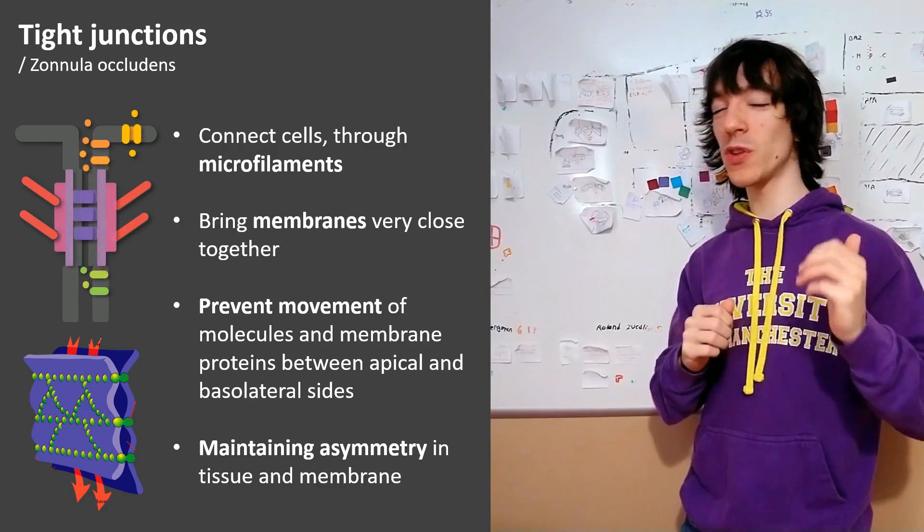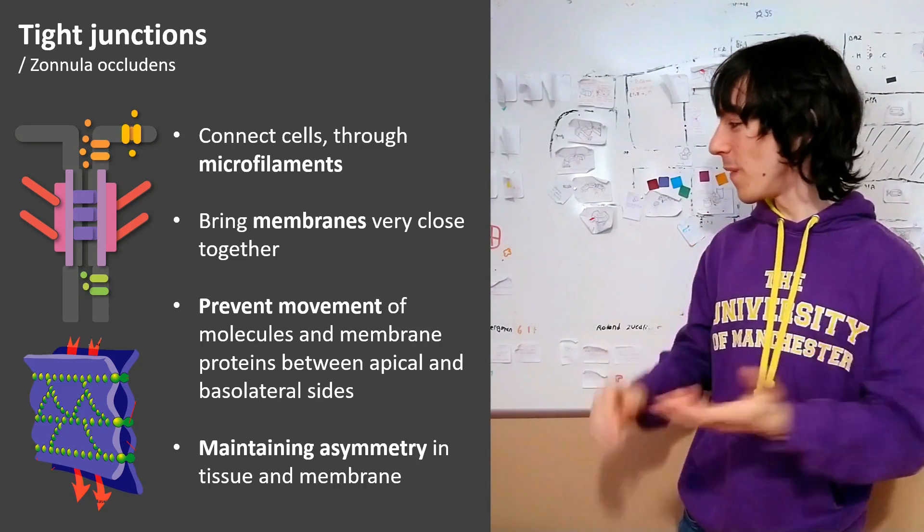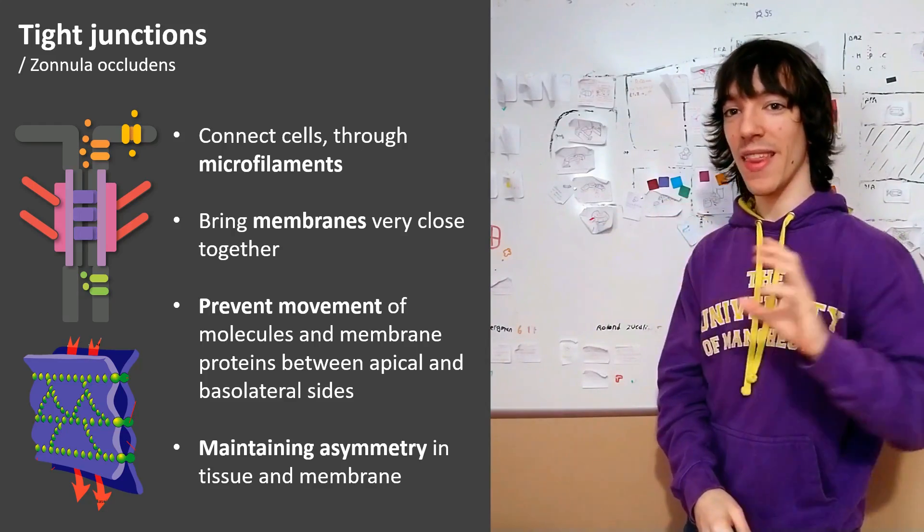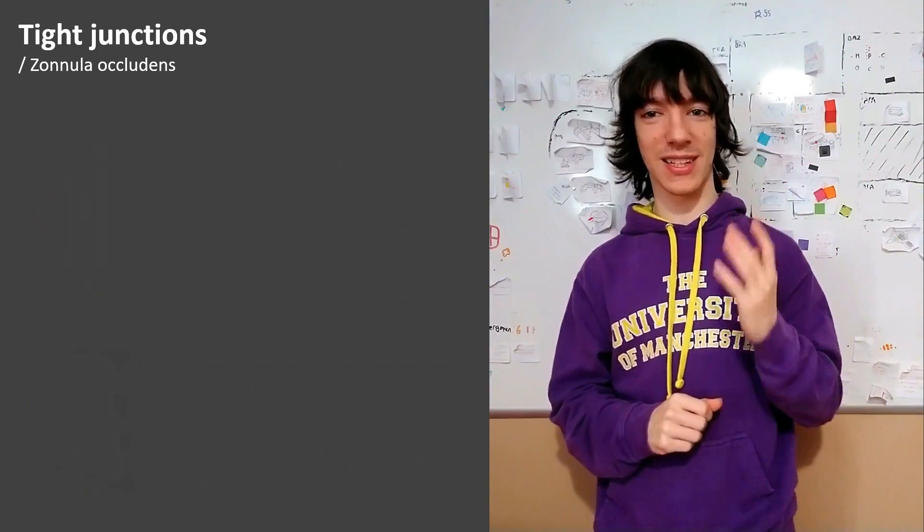In order to do that effectively, we don't only need one tight junction complex, we need a lot of them forming bands that go around the cell and are interconnected. That way no molecules can go through.